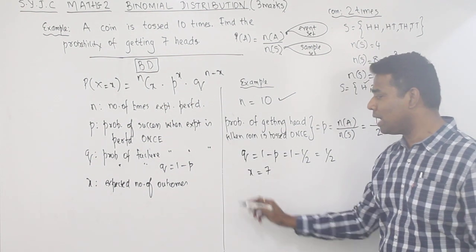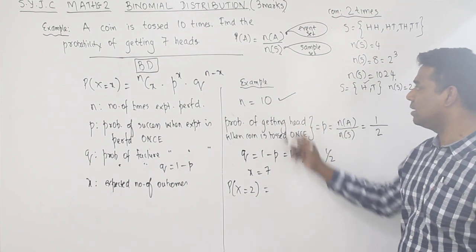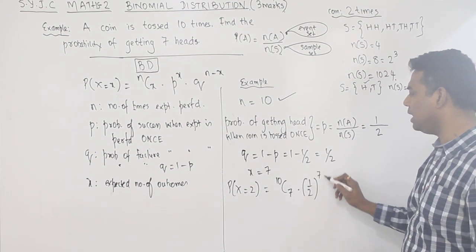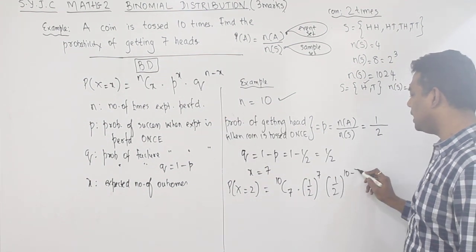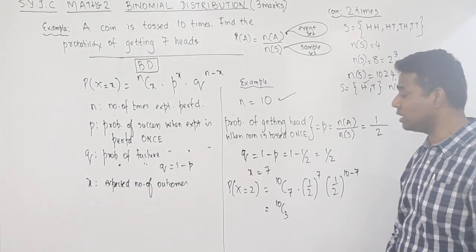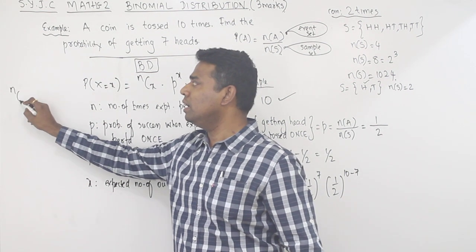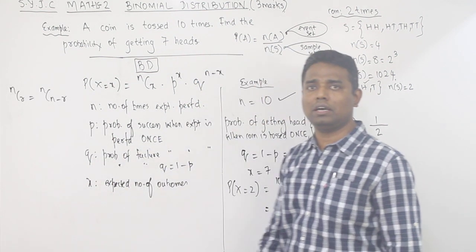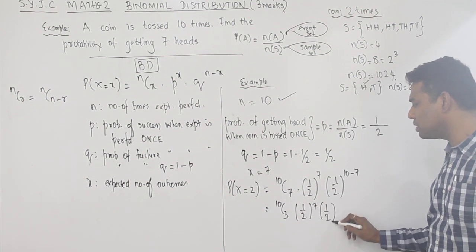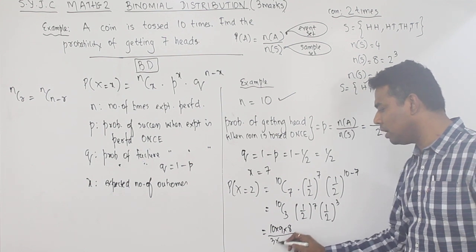Now let us plug in the values. P(X = 7) = 10C7 × (1/2)^7 × (1/2)^(10−7). Now 10C7's shortcut is 10C3, since nCr = nC(n−r). So 10C3 × (1/2)^7 × (1/2)^3. Computing 10C3: (10 × 9 × 8) / (3 × 2 × 1). Since the base is the same, powers add: (1/2)^(7+3) = (1/2)^10.